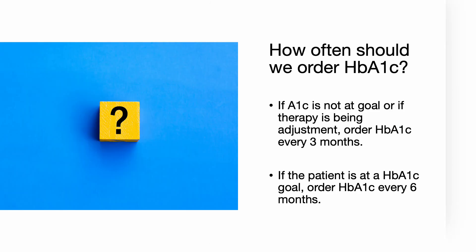Now that we have started patients on a diabetic regimen, how often should we order hemoglobin A1c? If the hemoglobin A1c is not at goal or if therapy is being adjusted, order A1c every three months. If the patient is at hemoglobin A1c goal, then order hemoglobin A1c every six months.